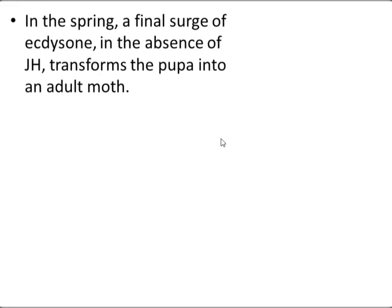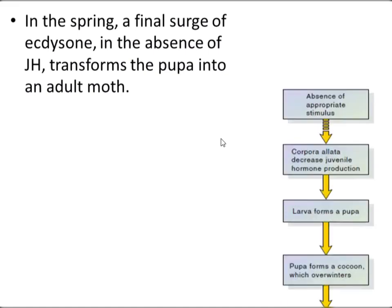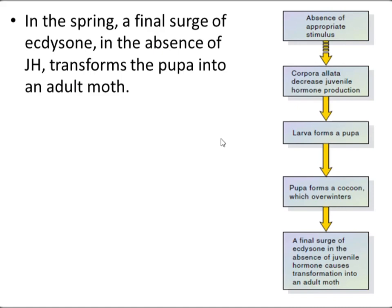The pupa then forms a cocoon to overwinter. In spring, a final surge of ecdysone in the absence of juvenile hormone transforms the pupa into an adult. The flow sheet shows: when JH production decreases, the larva differentiates into a pupa; the pupa overwinters in a cocoon; and a final surge of ecdysone in the absence of JH causes transformation into the adult morph.